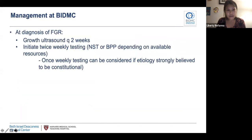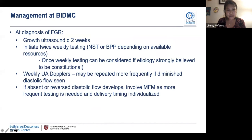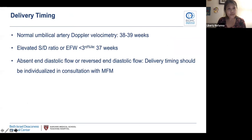To summarize BIDMC PPGD delivery timing specifically: patients with FGR and normal Dopplers should be scheduled for induction at 38 to 39 weeks. If they have an elevated SD ratio or EFW less than the 3rd percentile, delivery is recommended at 37 weeks. If a patient has absent or reversed end-diastolic flow, delivery timing should be individualized in consultation with MFM.